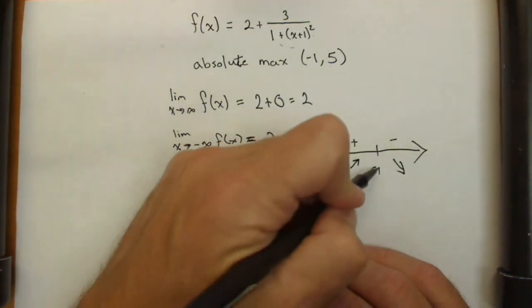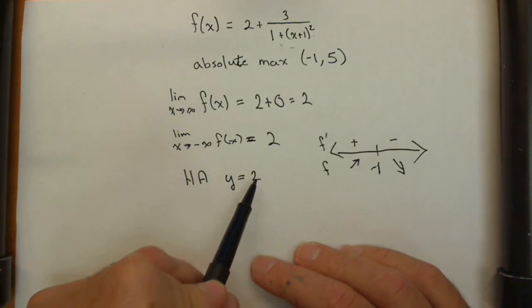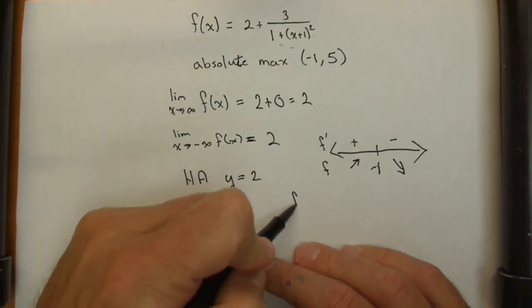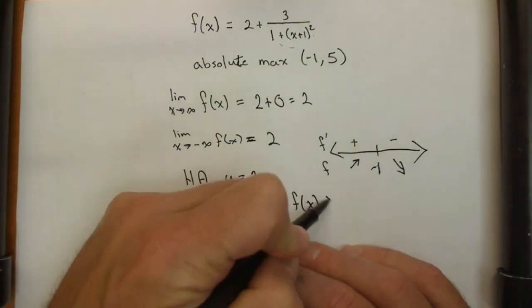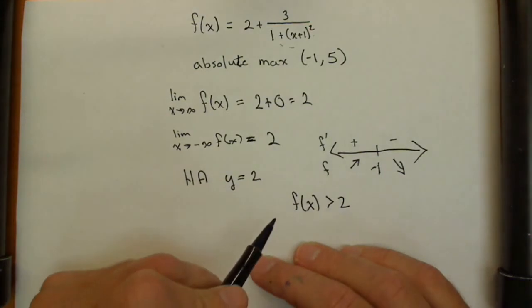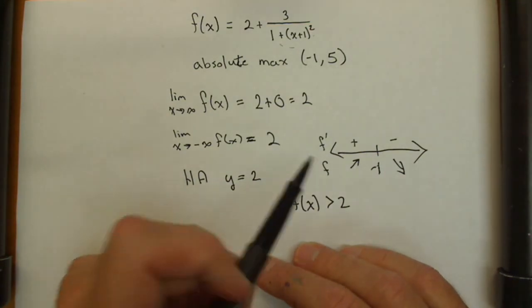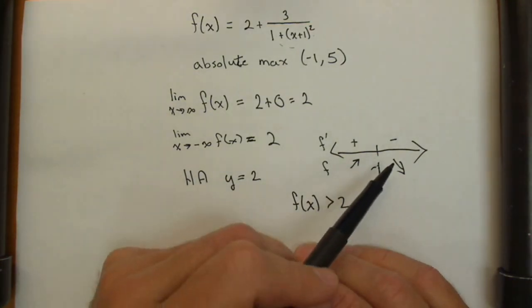It's not going to cross that horizontal asymptote, so we can guarantee that f(x) is always greater than 2. And we're not going to have a minimum because nowhere does our function go from decreasing to increasing. We can see it in our sign chart.